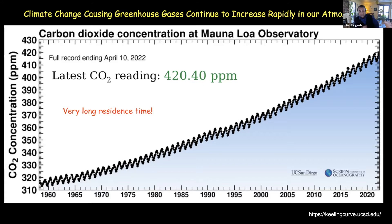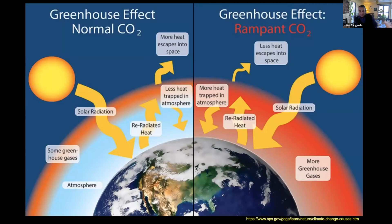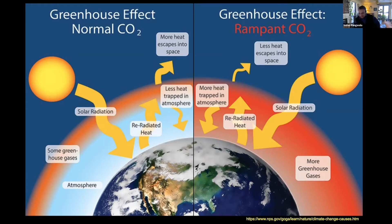What is the accumulation of CO2 and other greenhouse gases doing to our climate system? Essentially, it's allowing less of the energy the Earth receives from the sun to go back into space. When that happens, you're accumulating more heat in the climate system. That's what the greenhouse gas effect is — we're accumulating more heat and creating an imbalance from what existed previously.